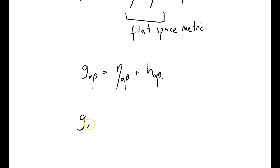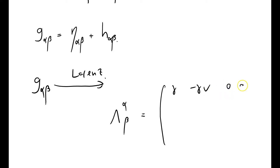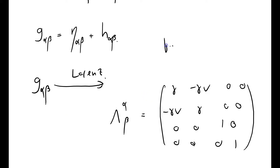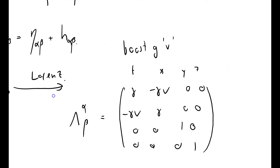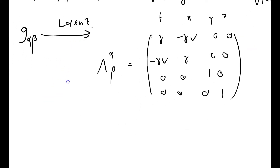What I'm going to do now is ask how G_αβ transforms under a Lorentz transformation. You'll remember the Lorentz transformations — we normally write them down with one upstairs and one downstairs index. It's going to be γ, −γv in the top row, −γv, γ in the second, zeros elsewhere, and an identity matrix in the spatial block. This is a boost of v in the x direction, covering t, x, y, and z. And of course γ is one over root one minus v squared.